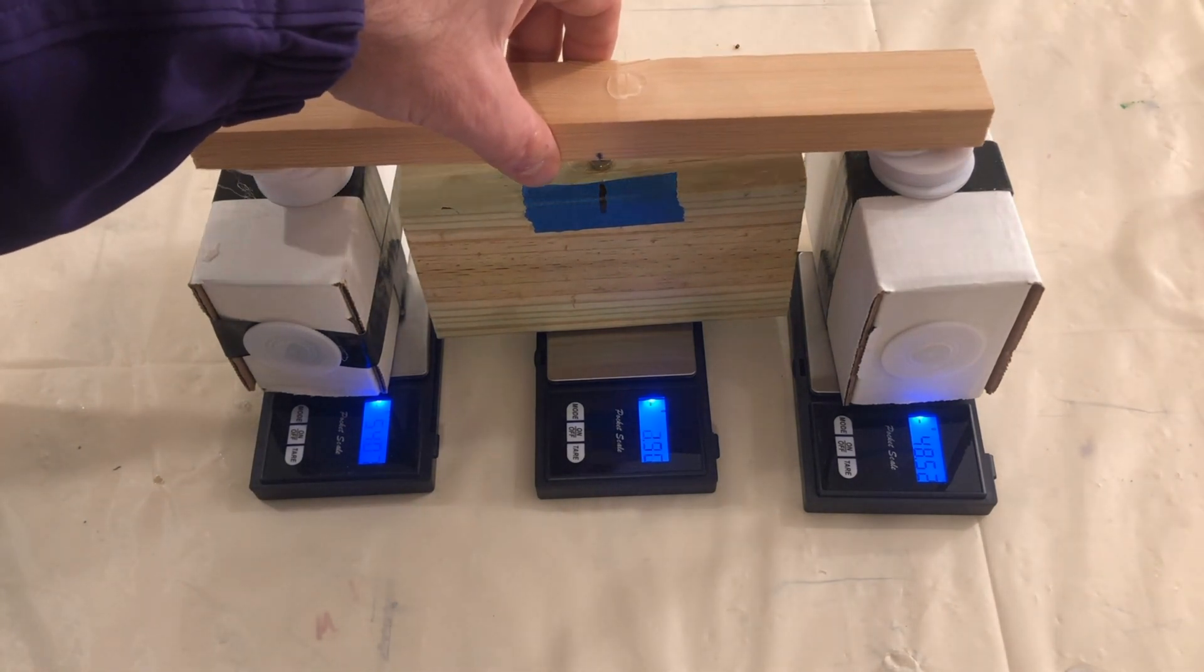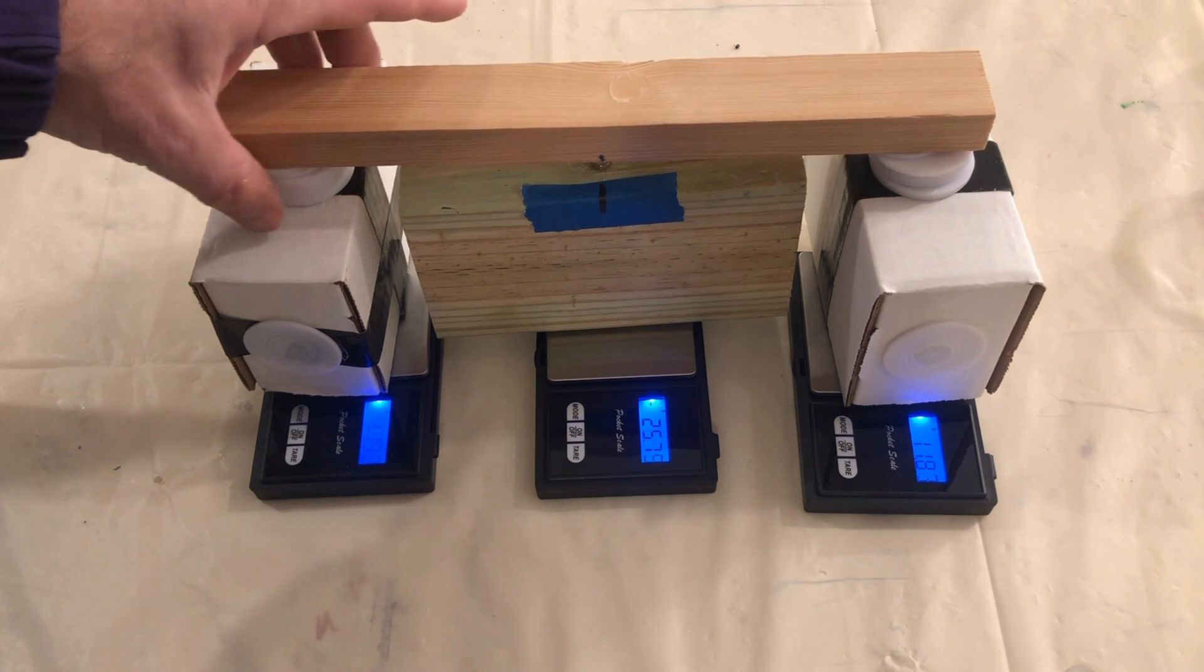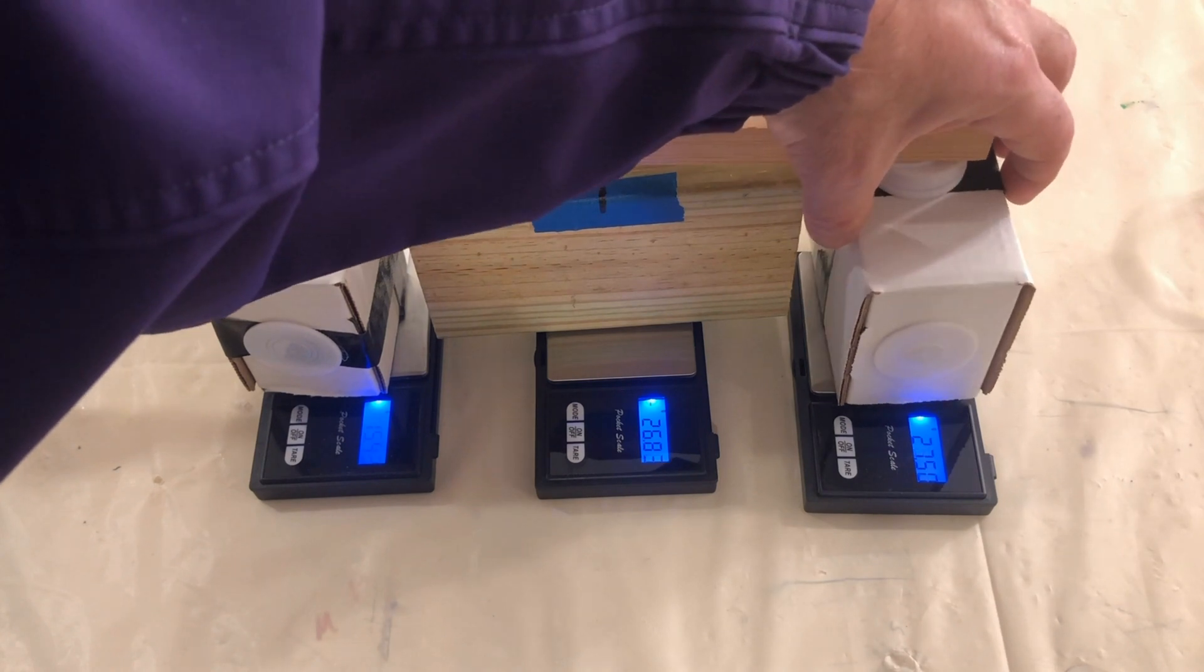Take the beam with the large magnet facing downward and center it above the small magnet on the block. The lines on the beam and the block allow us to ensure that it's centered.